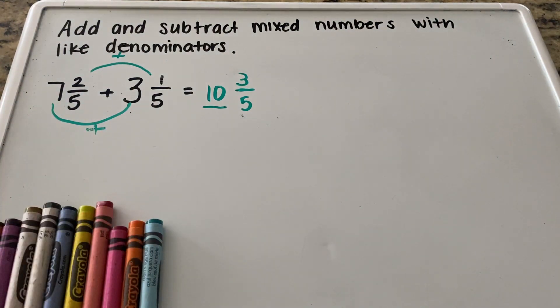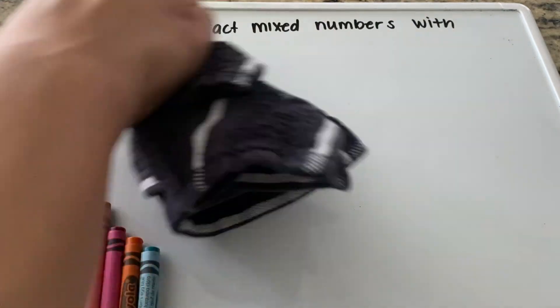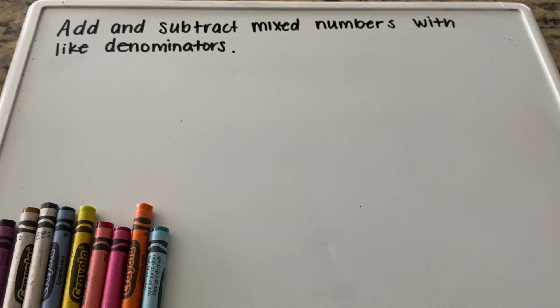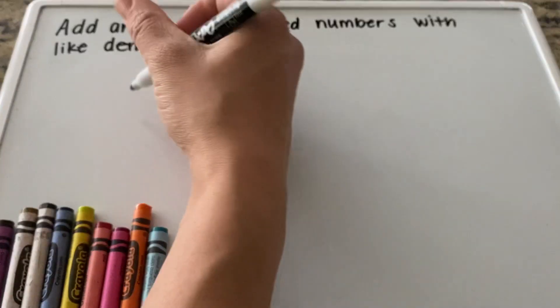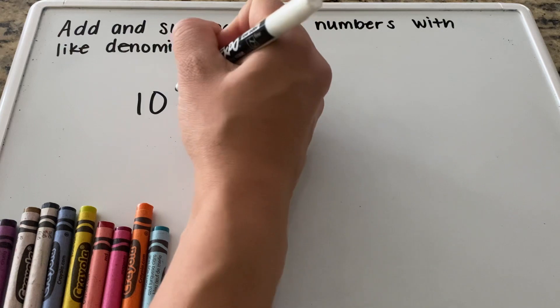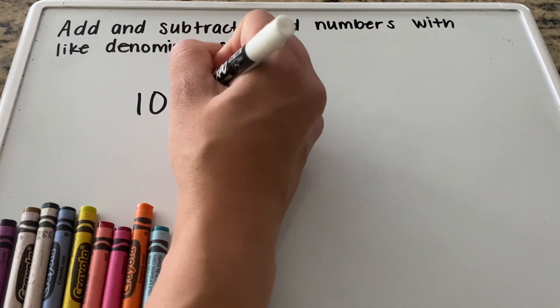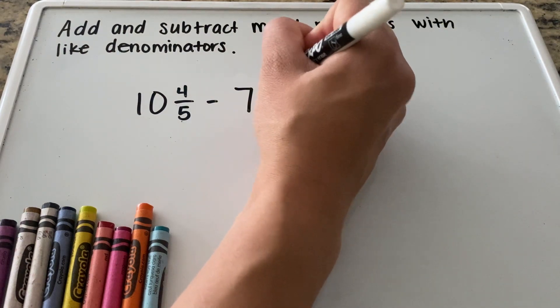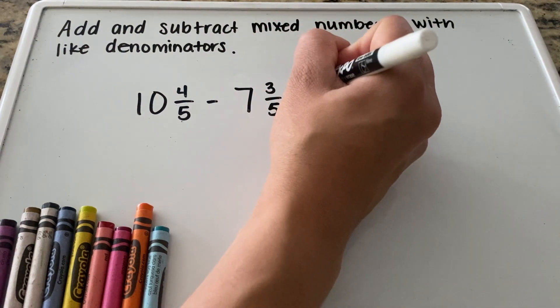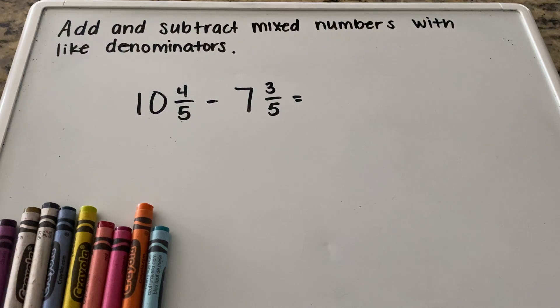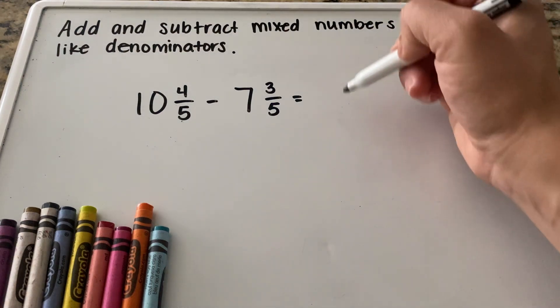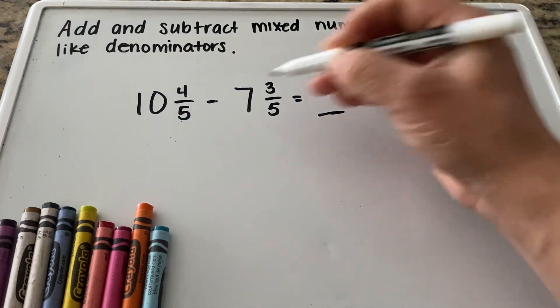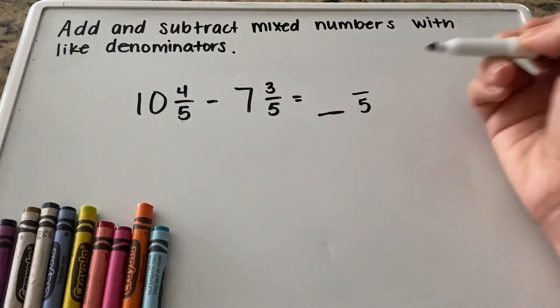Let's go ahead and do a subtraction problem with like denominators. Let's do the problem 10 and 4/5 minus 7 and 3/5. In this case we're going to be doing the same thing when we get our answer. We're going to try to find some whole number and then our fraction with the same like denominators, which in this case again is five.